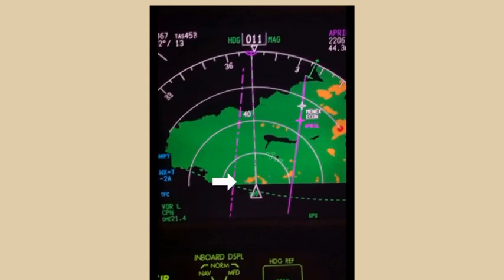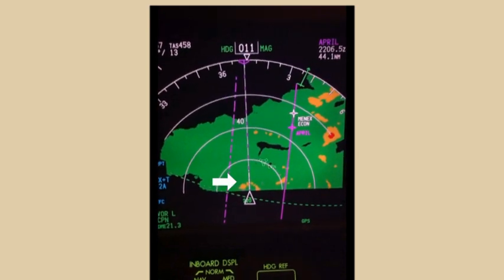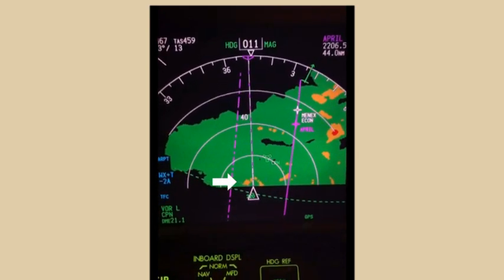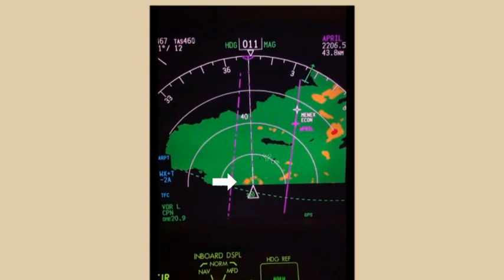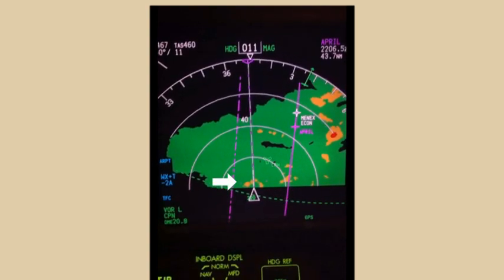In this case, the aircraft is experiencing stratiform conditions and the blooming effect moves with and stays just in front of the aircraft. In stratiform rain conditions, the blooming may be ignored.